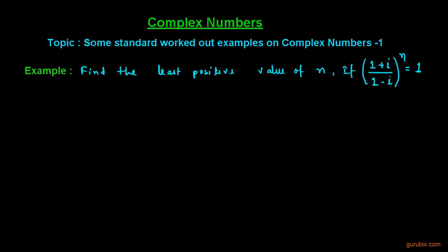Welcome friends. In this series of videos, we shall learn some standard samples on complex numbers and here is the first example. Find the least positive value of n if 1 plus iota over 1 minus iota raised to the nth power is equals to 1.